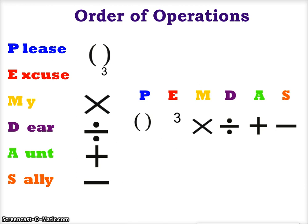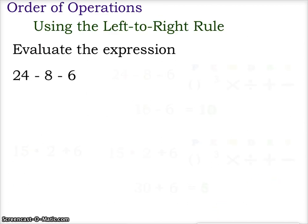So parentheses, followed by exponents, multiplication and division left to right, and then addition and subtraction left to right. So let's work through some examples of this, and we're going to use the expression 24 minus 8 minus 6. And the first thing we're going to do is we're going to start left to right, and there is no multiplication or division here, no exponents and no parentheses, no grouping symbols.